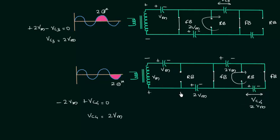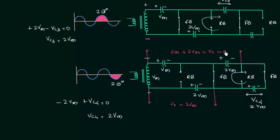Now I will show how this circuit works as a voltage doubler, tripler, and quadrupler. If output is measured across capacitor C2, Vout equals 2Vm — it works as a voltage doubler. Measuring across C1 and C3 gives Vm plus 2Vm equals 3Vm — it works as a voltage tripler. Measuring across C2 and C4 gives 2Vm plus 2Vm equals 4Vm — it works as a voltage quadrupler.